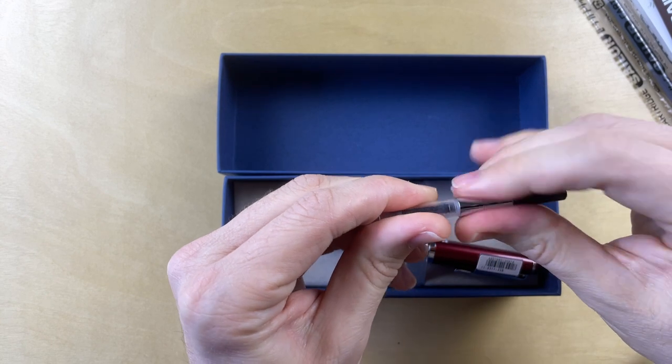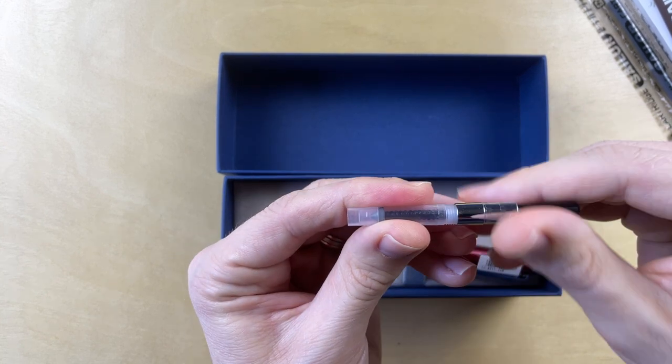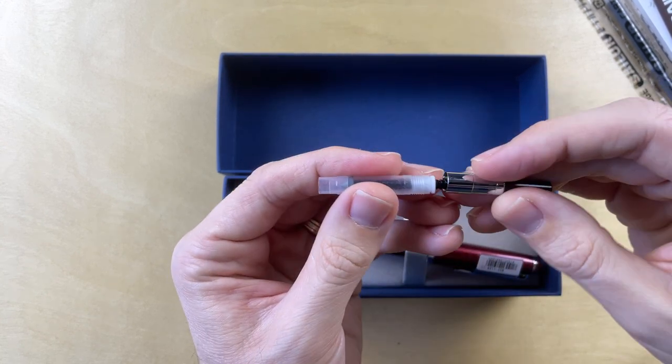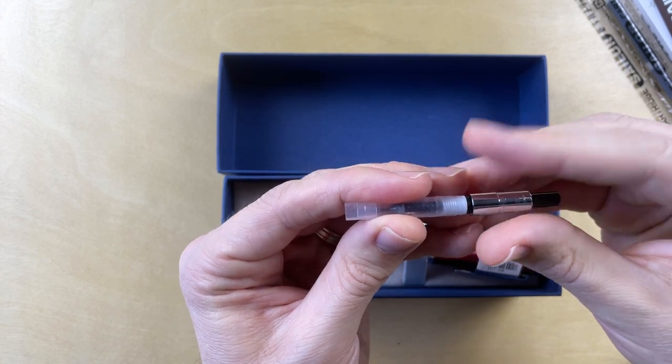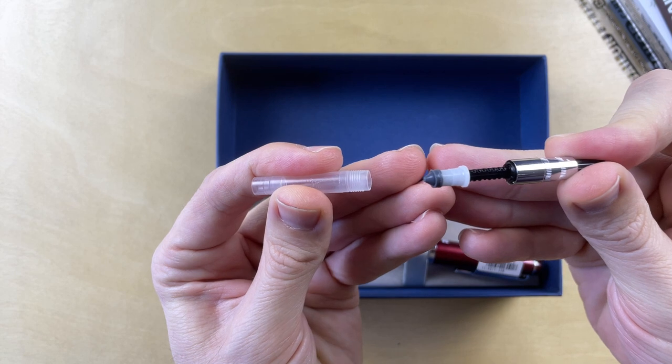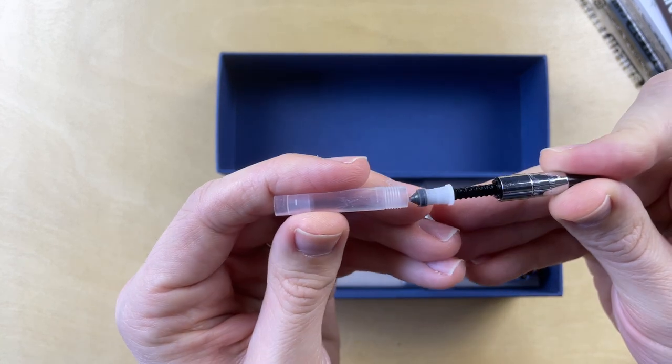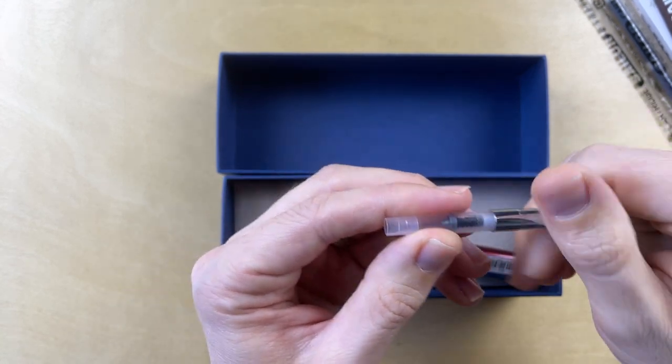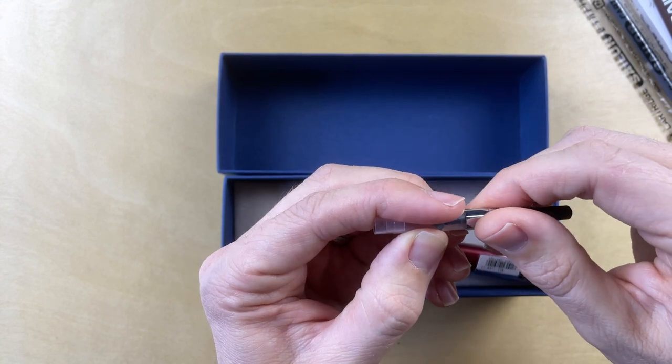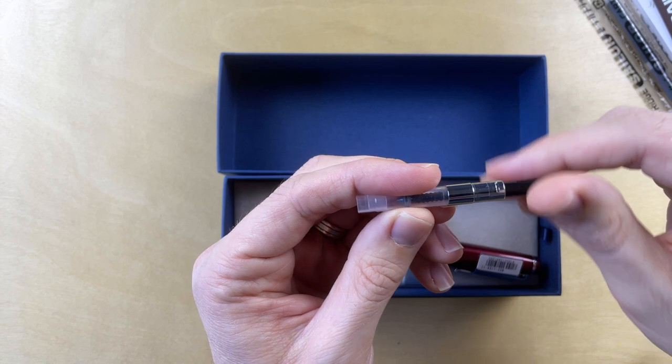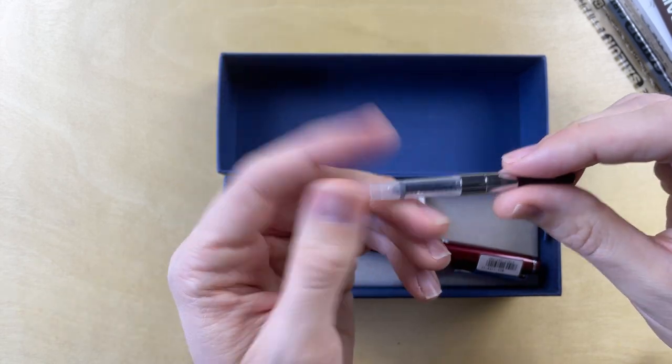And the cool thing about them is this is my favorite thing that a converter can do: twist off. So you can actually get this completely apart and you can lube it up and clean and maintain it very well. That's one of the things I love about Sailor. Platinum's converters are like that too.